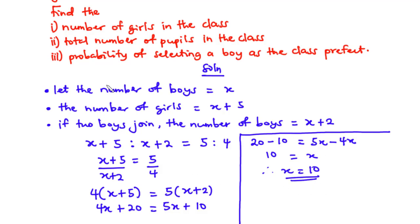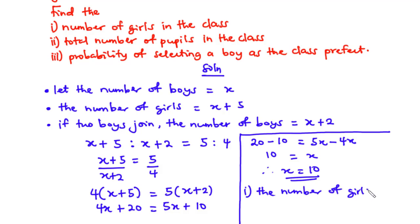Now we are asked to find (i) the number of girls in the class. The number of girls was given as x plus 5. Therefore, the number of girls in the class is 10 plus 5, which is equal to 15.